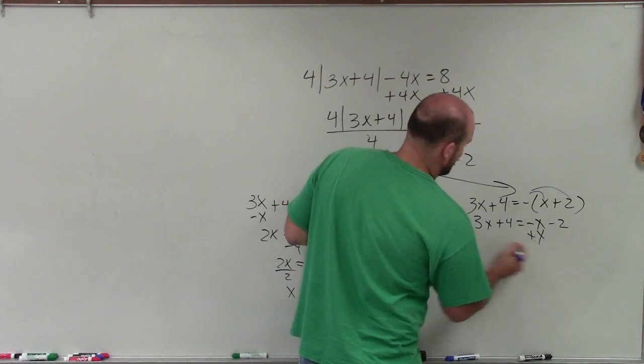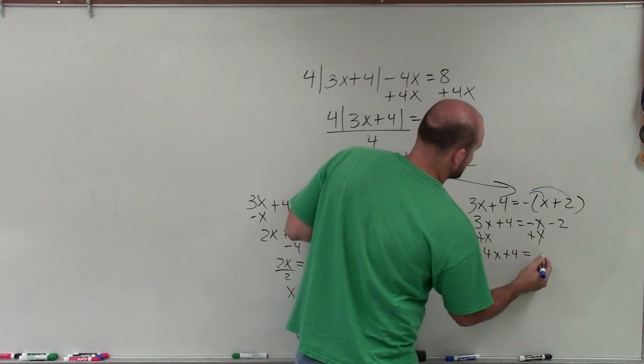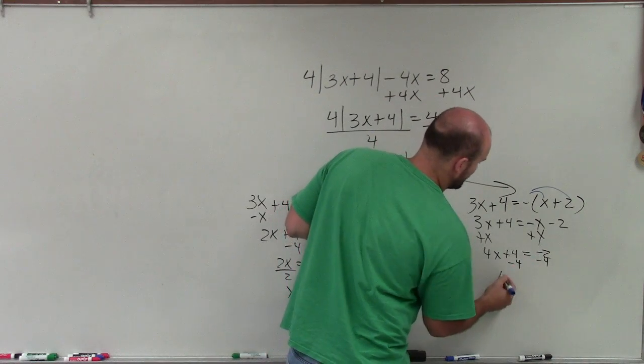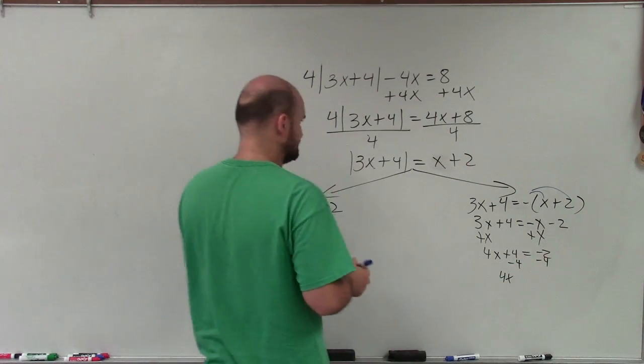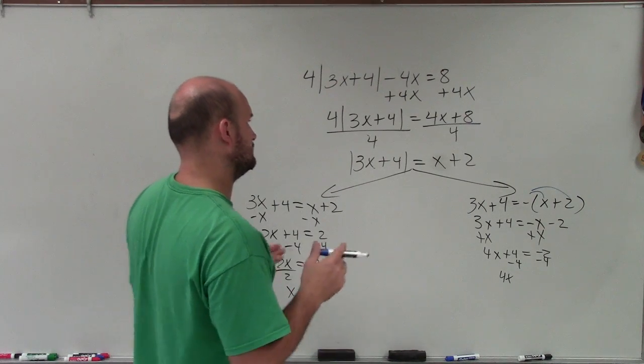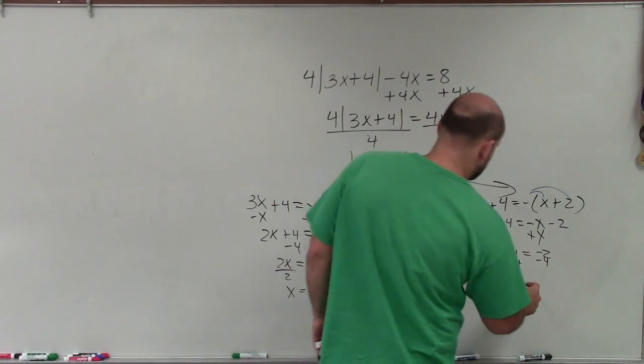So I have here 3x plus 4 equals negative x minus 2. Then again, solve for my x's, so I add an x onto both sides. So I have 4x plus 4 equals negative 2.